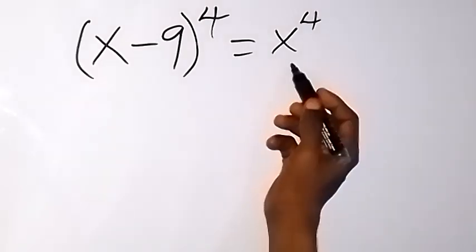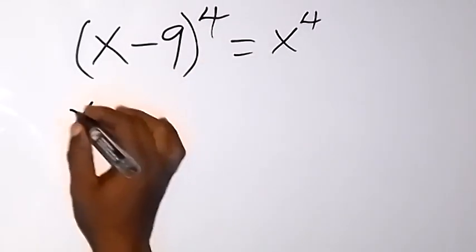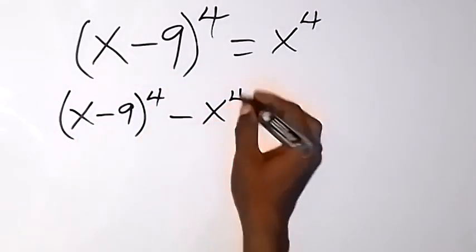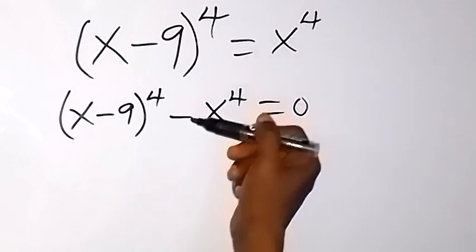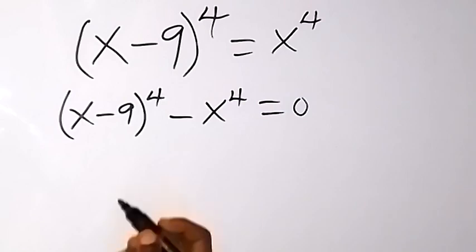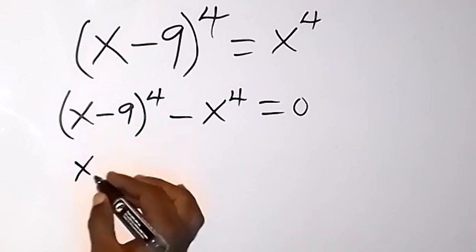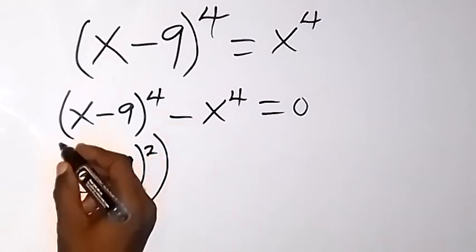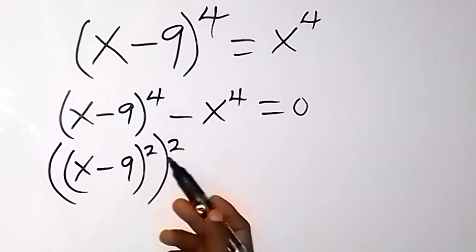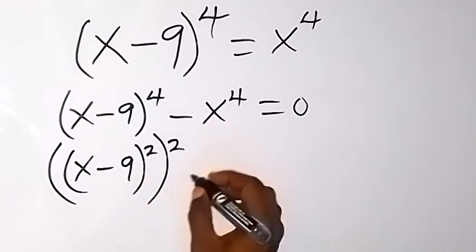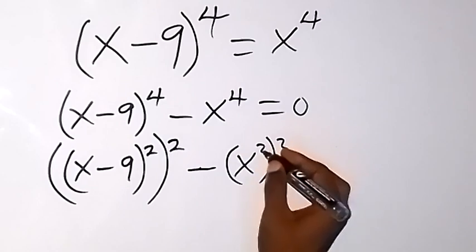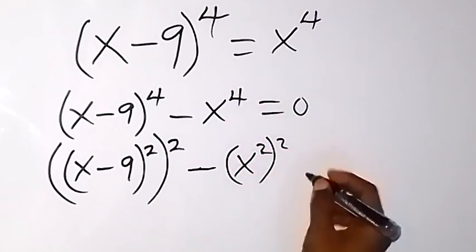Now from here, let's take x raised to power 4 to this side and we have (x minus 9) raised to power 4 minus x raised to power 4 equals 0. We can form something of the difference of two squares out of this. We write (x minus 9) squared, then r squared, and we split this using 2 times 2 on the law of indices, then minus x raised to power 2, raised to power 2, split as 2 times 2, which equals 0.